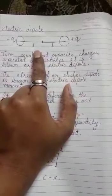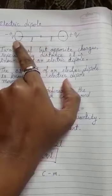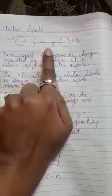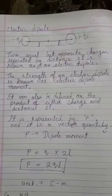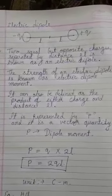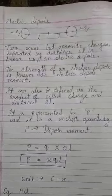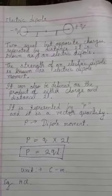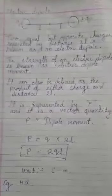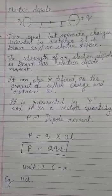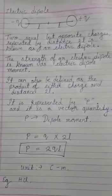An electric dipole has two charges with some distance separating them. If you see the midpoint, from the midpoint to one charge is L, and from the midpoint to the other charge is also L, so the total distance is 2L. The charges are equal in magnitude but opposite in nature. So the definition: two equal but opposite nature charges separated by a distance of 2L is known as an electric dipole.